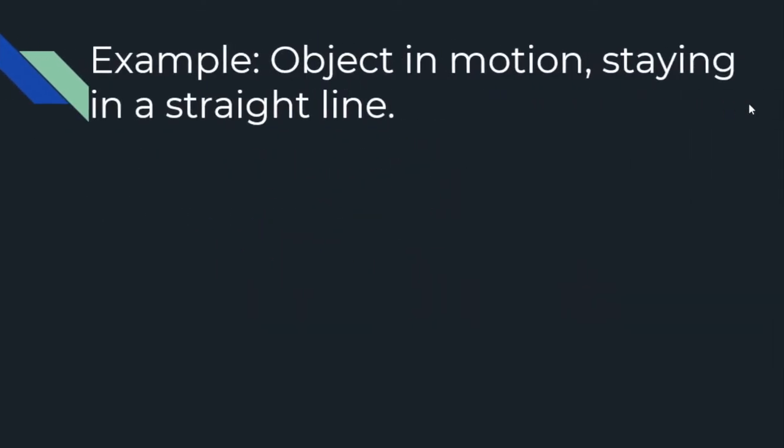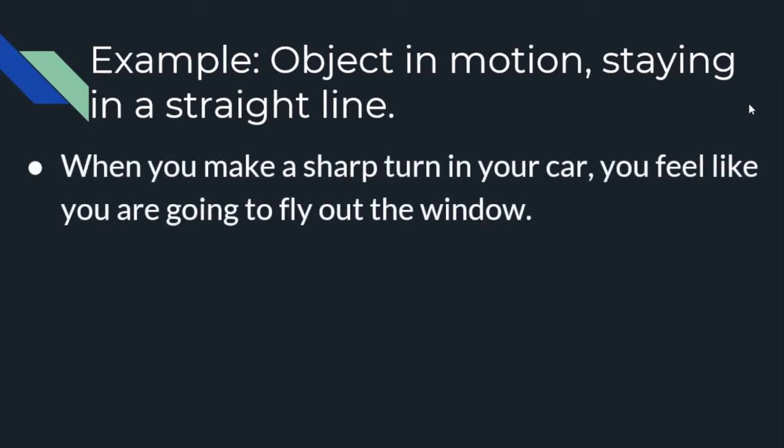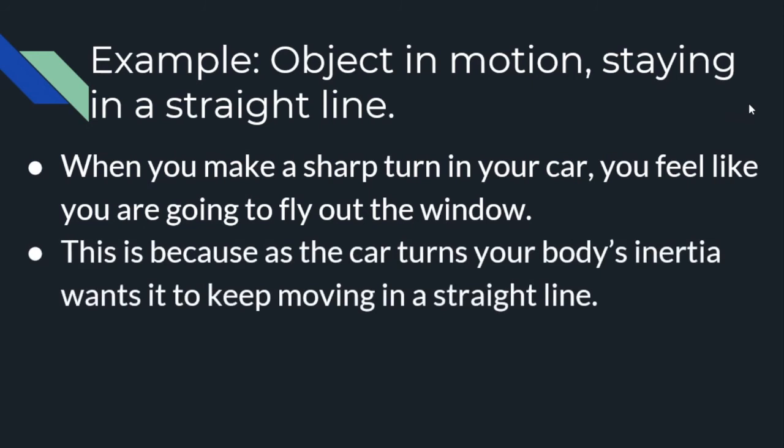The last example we're going to talk about is for an object in motion that stays in a straight line. Imagine you make a sharp turn in your car—you almost feel like you're going to fly outside the window. This is because as the car is turning, your body's inertia, or mass, wants it to keep moving in a straight line. I'm sure you guys have been on car rides before, right, where somebody's in the middle or somebody's on the end, or maybe you're on a bus ride, and that bus or that car takes a sharp turn and everybody goes sliding to the right of the car or to the right of the bus. The reason being inertia. All of you guys are in motion, you're all moving in that direction. When the car turns to the left, your body wants to continue in that straight line, which results in you moving to the side.